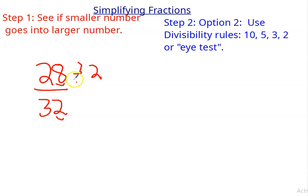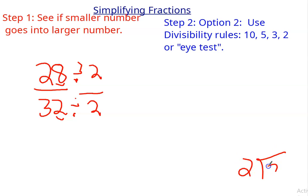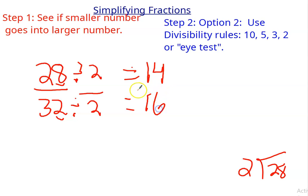Divided by 2. 2 into 28 is 14. 32 divided by 2 is 16. And I have 14 sixteenths. So I want to check. Does the 10 rule work? No. Does 5? No. Does 3 work? 4 plus 1 is 5 — no. 1 plus 6 is 7 — no.